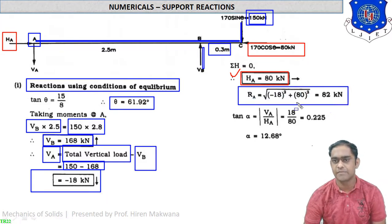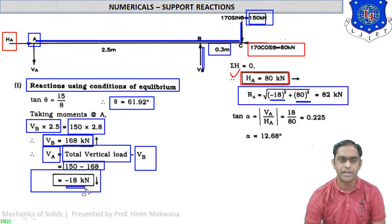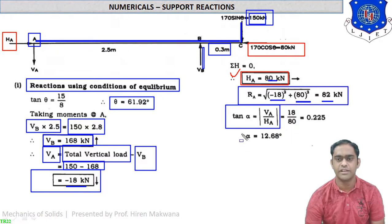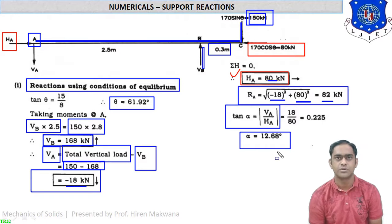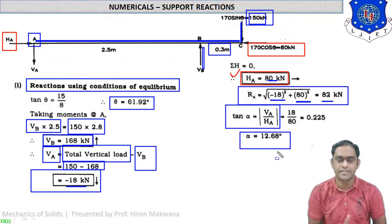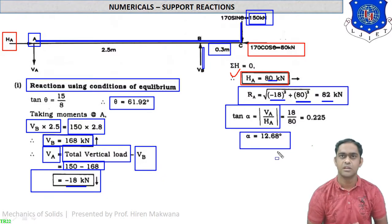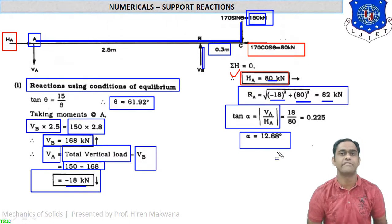The resultant reaction RA = √(VA² + HA²) = √(18² + 80²) = 82 kN. The angle of the resultant reaction is alpha = tan⁻¹(|VA| / HA) = tan⁻¹(18/80) = 12.68 degrees. In Lami's theorem we calculate RA directly without separating HA and VA components.